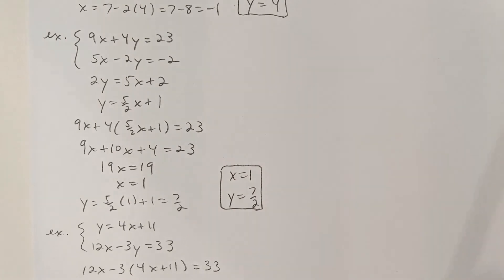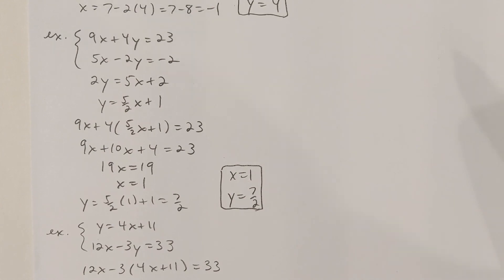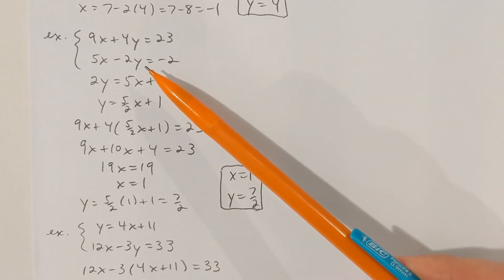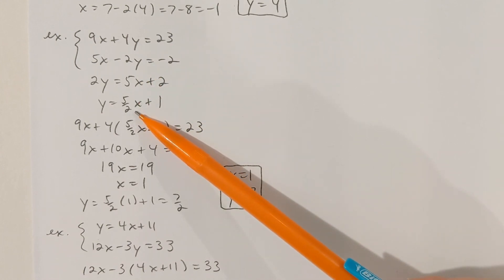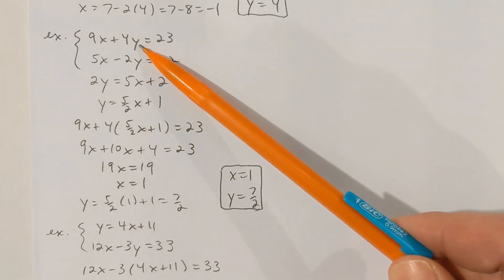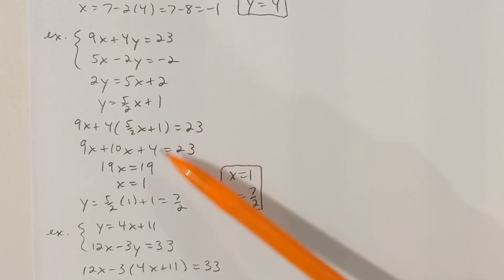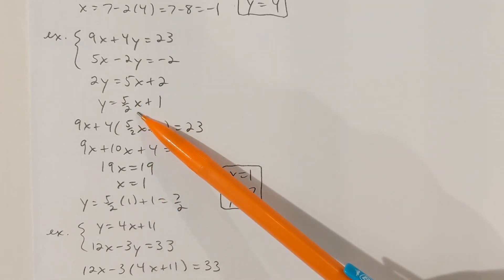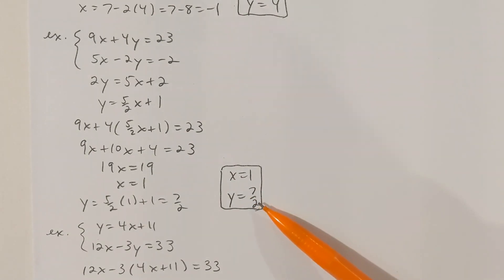Here's another example. In this next one, I don't have a coefficient of 1 or negative 1 in front of any of the variables — that's okay. I still just pick an equation and solve for a variable. Selecting the second equation and solving for y, I get y equal 5 halves x plus 1. I substitute that into the first equation where I see y, so everything is in terms of x. Solving for x gives x equal 1. Plugging 1 back into the substitution equation, y equals 7 halves. So x equal 1, y equal 7 halves is the solution.